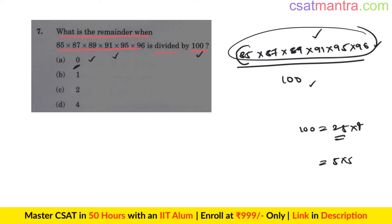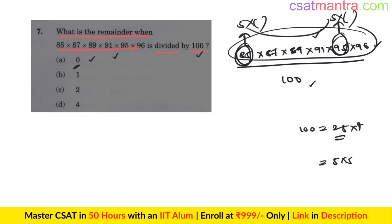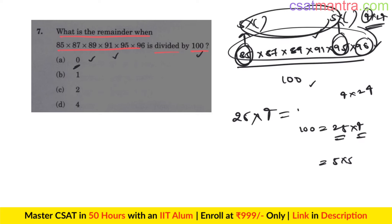We need 25 in the numerator. Since 25 = 5×5, we look for multiples of 5: 85 = 5×17 and 95 = 5×19, so we can take 5 out of each, giving 5×5 = 25. Now for the factor of 4: 96 is a multiple of 4 (4×24). So we have 25 from those two terms and 4 from 96, meaning 100 is in the numerator. 100 cancels out, so remainder is 0. Answer: A.